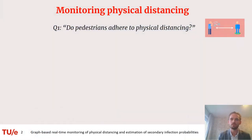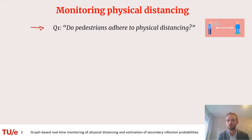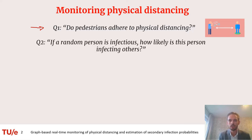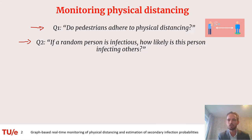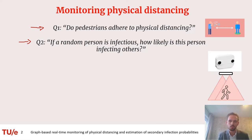It is believed that physical distancing is one of the most effective ways to prevent spreading of the COVID-19 virus. The first question that pops to mind is: do people adhere to physical distancing? The second question is: what if a random person is infected, how likely is he infecting other pedestrians? With the recent emergence of highly accurate pedestrian tracking sensors, like the one you can see on the right, we can try to find answers to both questions.